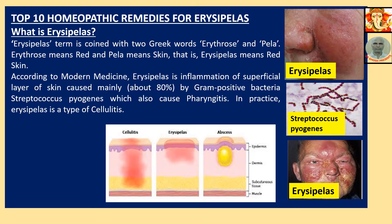Just look at the images below. This is Cellulitis. This is Erysipelas. This is Abscess. The layers of skin are: epidermis, dermis, subcutaneous tissue, then muscles. Cellulitis means the whole depth of the skin is inflamed. Erysipelas is just the top portion that is inflamed. Abscess is pus formation in the upper layer, mainly in the epidermis layer.